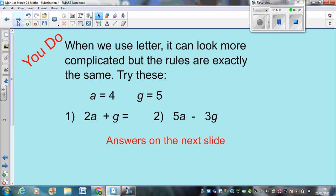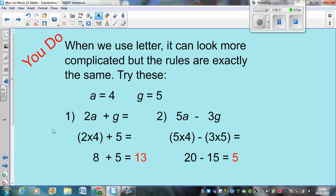Okay. Are we ready for some answers? So, looking at question one, 2A plus G. Well, two A means two times 4. G is 5. So, two times 4 plus 5. So, eight plus 5 equals 13. And question two, 2A take away 3G. Well, that means, sorry, 5A take away 3G. That means five times 4. Take away three times 5. So, 20 take away 15 is 5. Once again, I hope you got that.